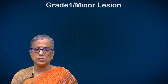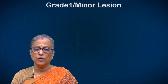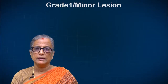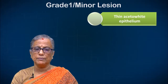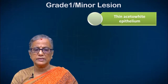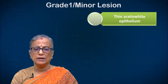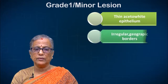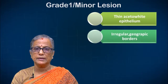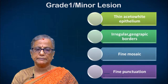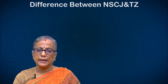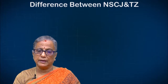Minor lesions, or grade 1 lesions, have four important features: a thin aceto-white epithelium that is slow to form and rapid to disappear, thin, transparent, and glossy with irregular geographical borders. Fine mosaic and punctations may also be present, classified into type 1, type 2, and type 3.